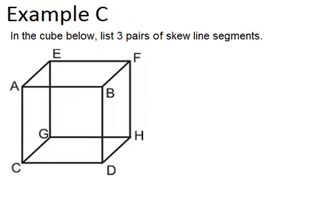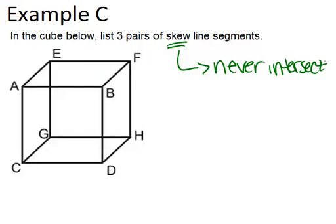Let's look at the last example. In this cube, list three pairs of skew line segments. Remember, to be skew, it has to satisfy two things: they have to never intersect, even if you extend them forever as lines, and they also have to be in different planes.